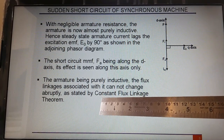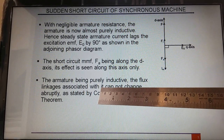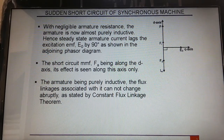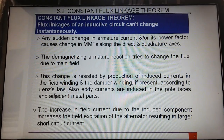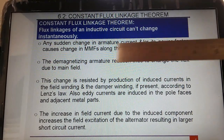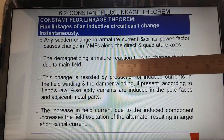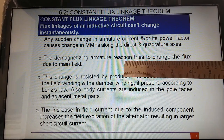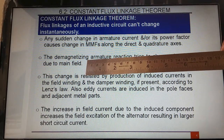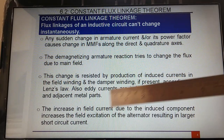The short circuit MMF Fa being along the d-axis, its effect is seen only along the d-axis. Since the armature is purely inductive, flux linkages associated with it cannot change abruptly. The moment short circuit happens, sudden current appears in the circuit, and because of it, additional flux will come in the air gap. This flux cannot change suddenly — that statement is termed the constant flux linkage theorem, which states that flux linkages of an inductive circuit cannot change instantaneously.